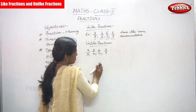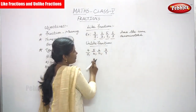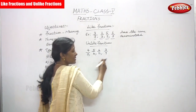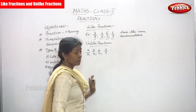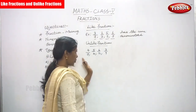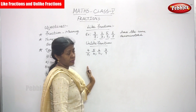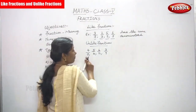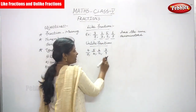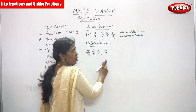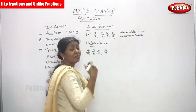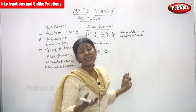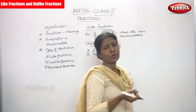Now, unlike fraction means what? For example: 4 by 7, 5 by 10, 6 by 12, 3 by 9. You can see different fractions with different denominators. So if the denominators are not the same, it is called an unlike fraction.